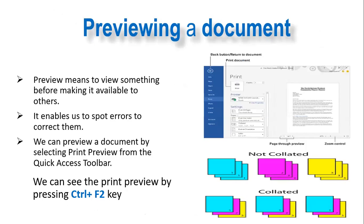When printing a document, we need to preview it for better results. Preview means to view something before making it available to others. It enables us to spot errors and correct them. We can preview a document by selecting print preview from the quick access toolbar, or by pressing Ctrl+F2, which will show you a preview of the page.